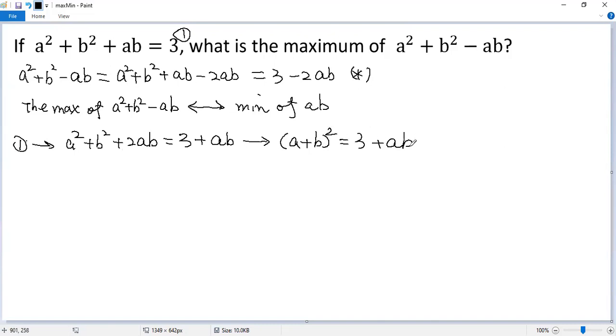So we can write a plus b squared minus 3. We know that's non-negative, so this is greater than or equal to negative 3. The minimum of ab can be obtained when this part equals 0, so when a plus b equals 0, or a equals negative b.